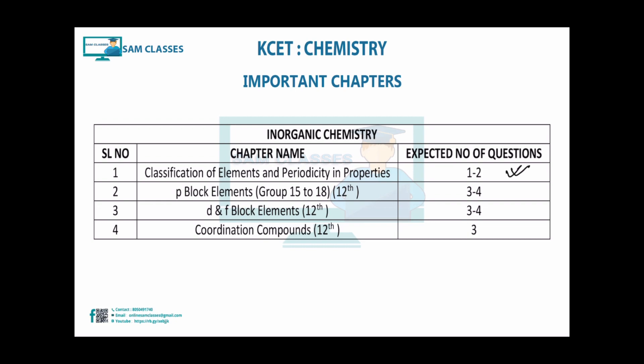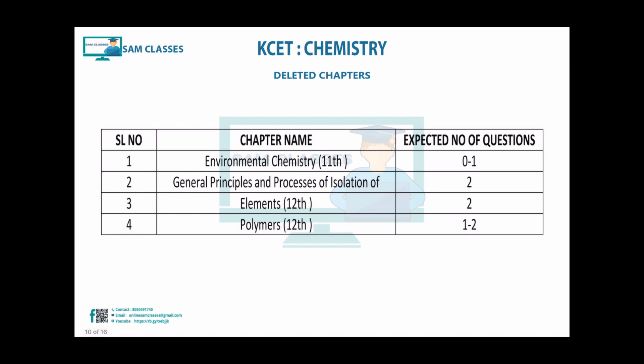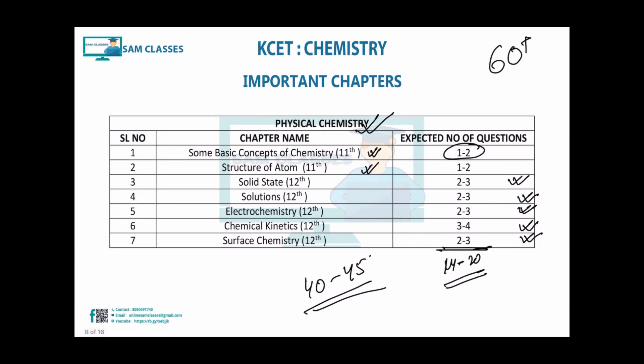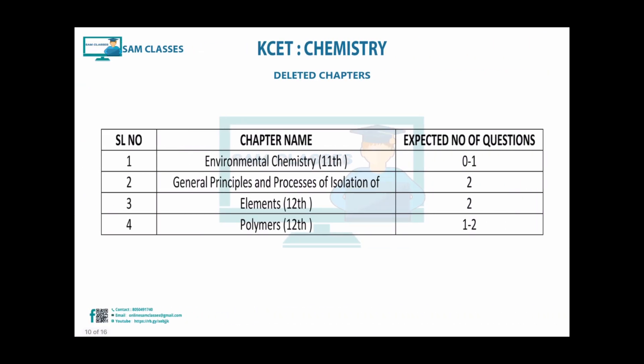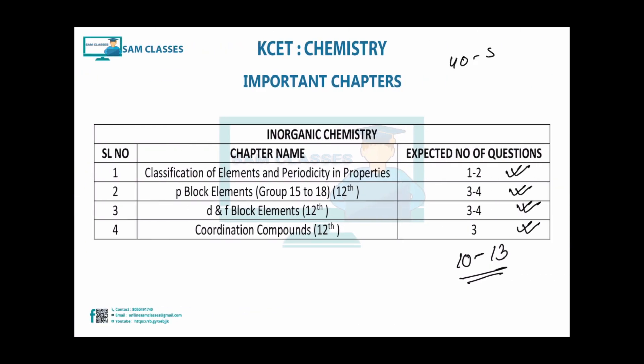For inorganic, classification of elements forms the backbone - one to two questions. P block of 12th is very important. D and F block is important. Coordination compounds cannot be skipped. These chapters together give a minimum of around 10 to 13 questions. So combining physical (14), organic (16), and inorganic (10) - that's a minimum of 40 questions. By studying just these priority chapters, you can score around 40 to 50 marks.